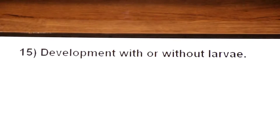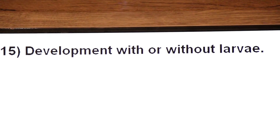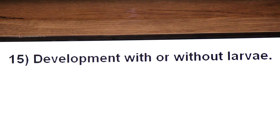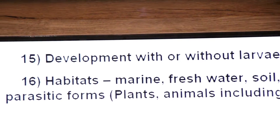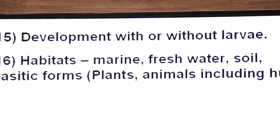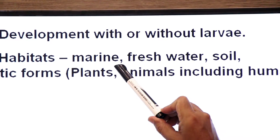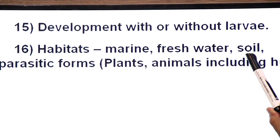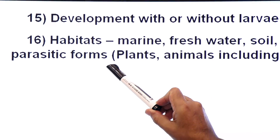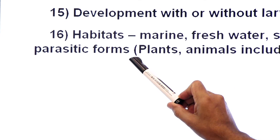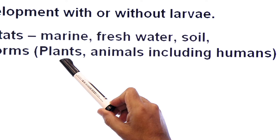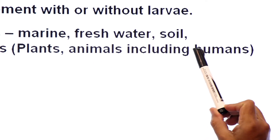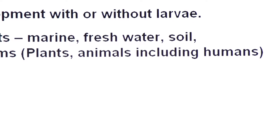Development: in some nematodes there is a larval stage, while in others there is no larval stage. Habitat: nematodes are found in marine (sea water), fresh water, and soil. Parasitic forms are present in the bodies of their host — they may be parasites of plants, animals, or humans.